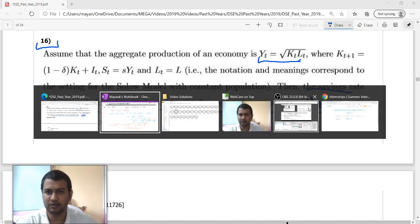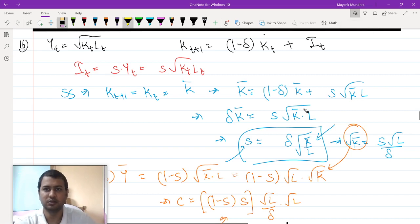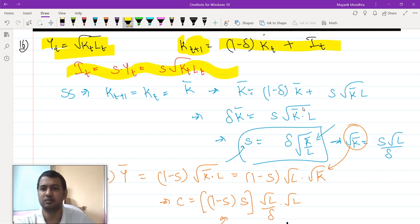I had actually solved this question, I forgot to record it. So I will just breeze you through the solution. Initially you just write that this is your production function. Amount of capital at t plus 1 will be equals to 1 minus delta Kt plus It where investment is your s times yt which is s times root KtLt.